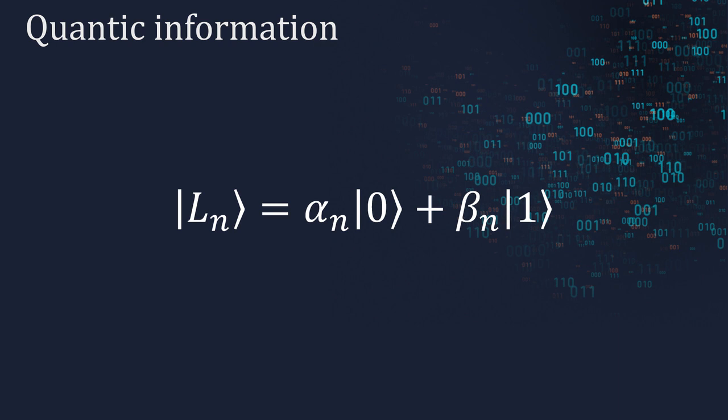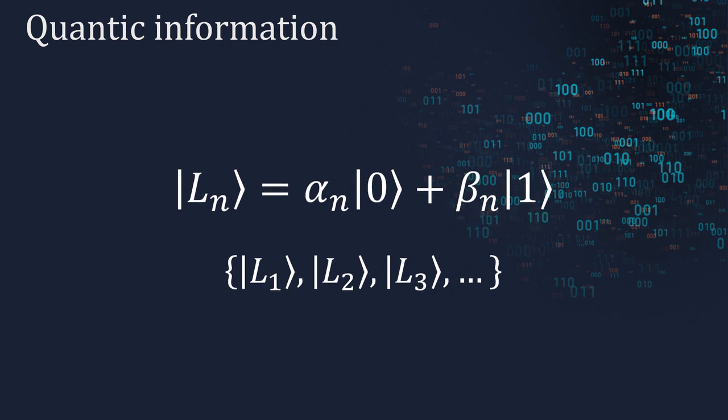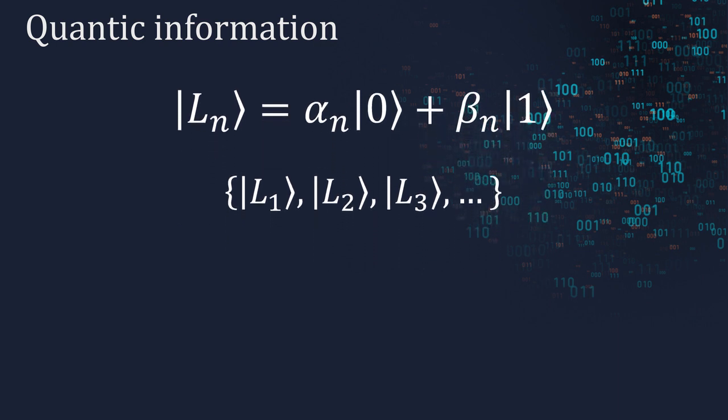Then, we can have an alphabet of n quantum letters such as this. As we are dealing with quantum states, such letters can be written in the form of a density matrix.